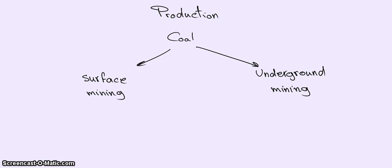So if we talk about coal first, there are two ways to remove coal from the ground: either surface mining or underground mining. Surface mining is used when the coal is close to the earth's surface.